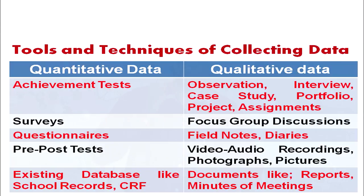For collecting quantitative data, the tools and techniques available include achievement tests, surveys, questionnaires, pre-tests, post-tests, and existing databases like school records or cumulative record forms (CRFs) of students. These tools will provide you quantitative data in the form of numbers or scores. For example, if you administer an achievement test in fifth class mathematics, the result will be the marks of the students.